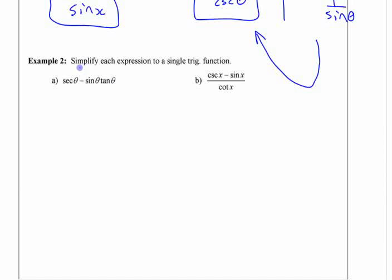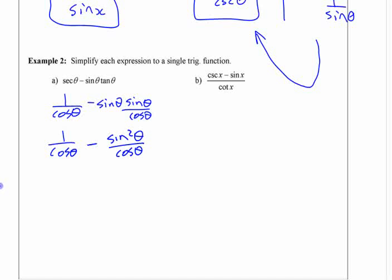Well, I think most people's first step, the way they end up teaching themselves trig identities, is to change everything to sine and cosine first. Secant, you could change to one over cosine. Sine, you can just leave. And tangent, you can change to sine over cosine. Or in other words, you could write it as one over cos minus sine squared over cos. So that's all that is, is using those basic identities. And then make a common denominator.